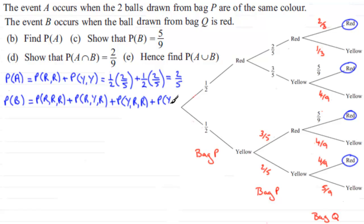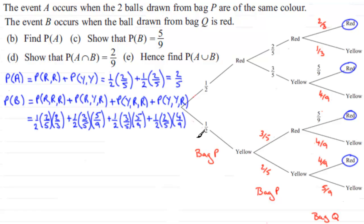When working out these probabilities we just multiply them in the normal way as we go along the branches. If you do that you should find the following, and working this out you end up with a total of five ninths — which is what we had to show.